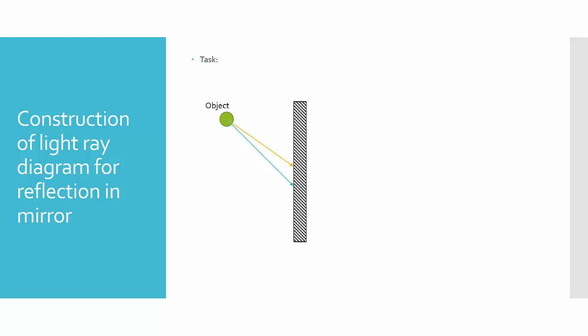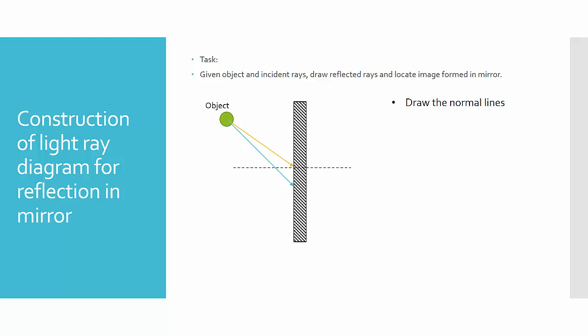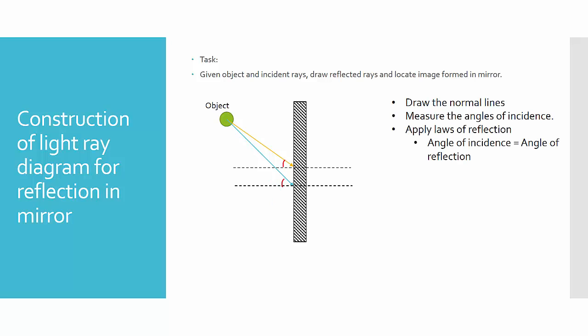This is the first type. The task is: if you are given an object and incident ray, draw the reflected rays and locate the image formed in the mirror. First, draw the normal lines at the point where the incident ray strikes the mirror. Measure the angle of incidence — always remember that the angle of incidence is the angle between the normal and the incident ray. Apply the law of reflection: angle of incidence equals the angle of reflection, and draw the reflected rays.